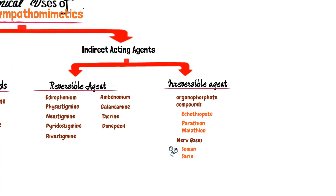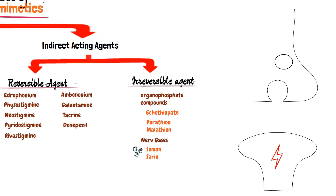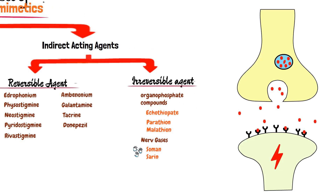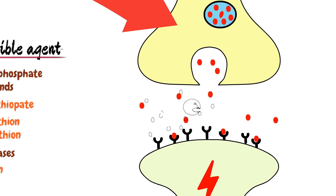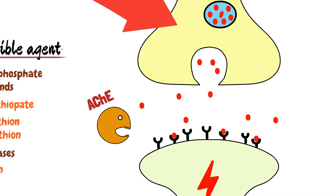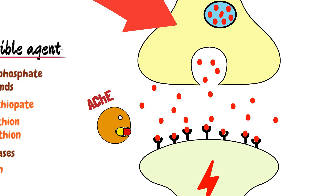Indirect-acting agonists show their actions by binding to enzymes in the synaptic cleft. The released acetylcholine is metabolized by the acetylcholinesterase enzyme and removed from the synaptic cleft. By inhibiting this enzyme, indirect-acting agents inhibit the metabolism or hydrolysis of acetylcholine in the synaptic cleft. That is how these agents increase the level of acetylcholine by inhibiting its degradation.